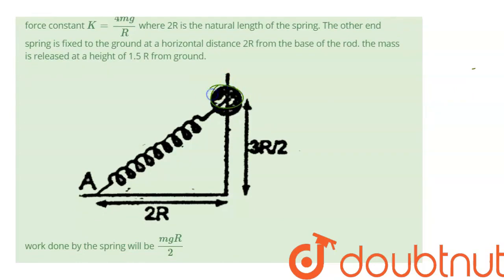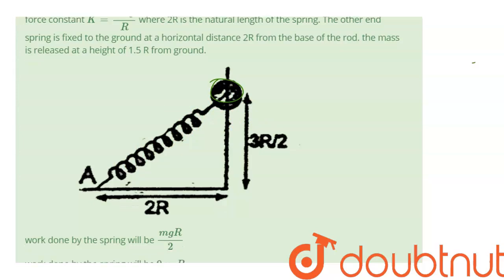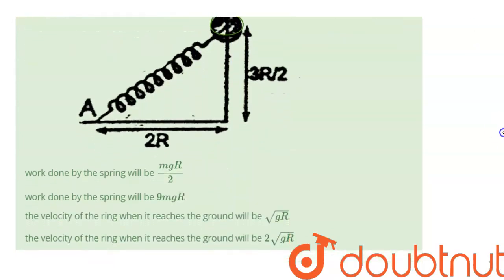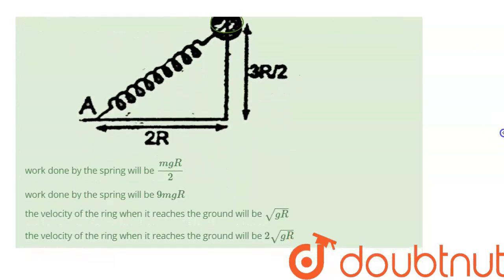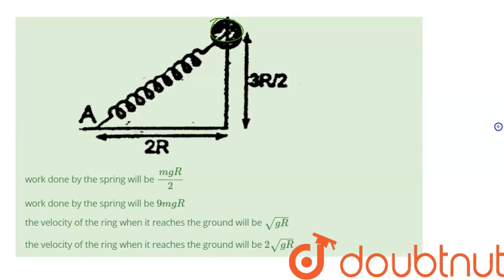The mass is on a rod and is also connected to a spring which has been stretched. We have to find out the work done by the spring and the velocity of the ring when it reaches the ground.